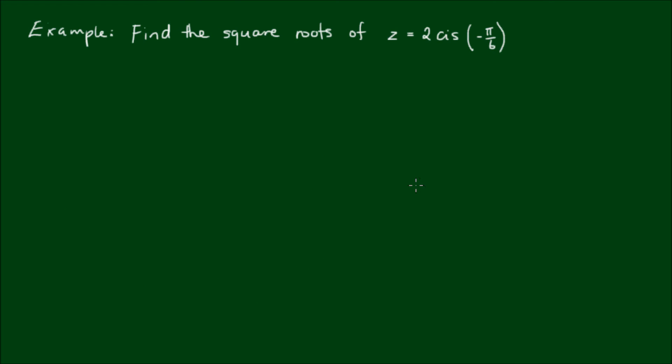I hope I haven't confused you too much, so let's do an example. Find the square roots of z = 2 cis(-π/6). The square root of z equals z^(1/2), which means n equals 2, and therefore k has the values 0 and 1, because k goes from 0 to a maximum of n-1, and 2-1 equals 1.